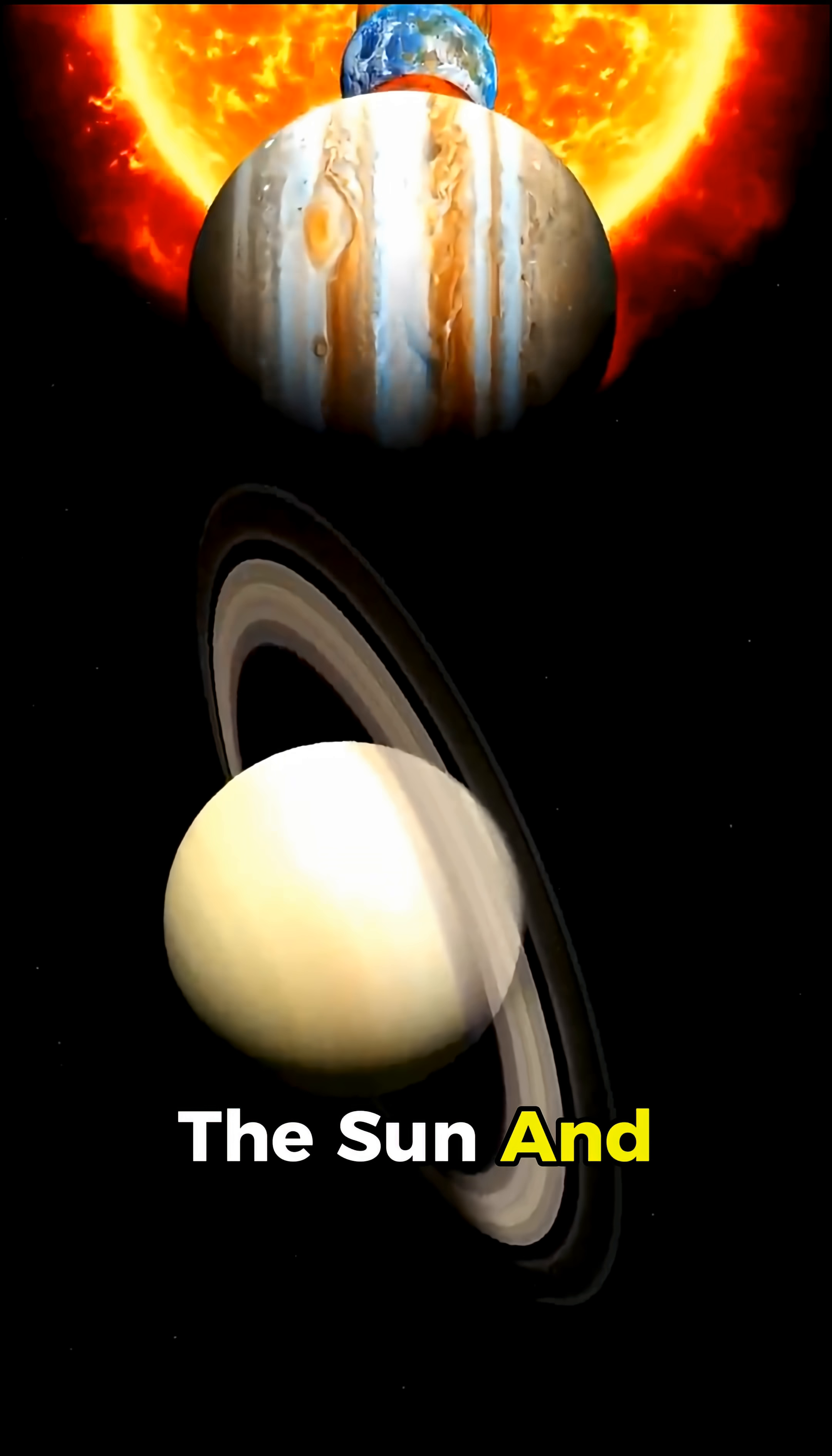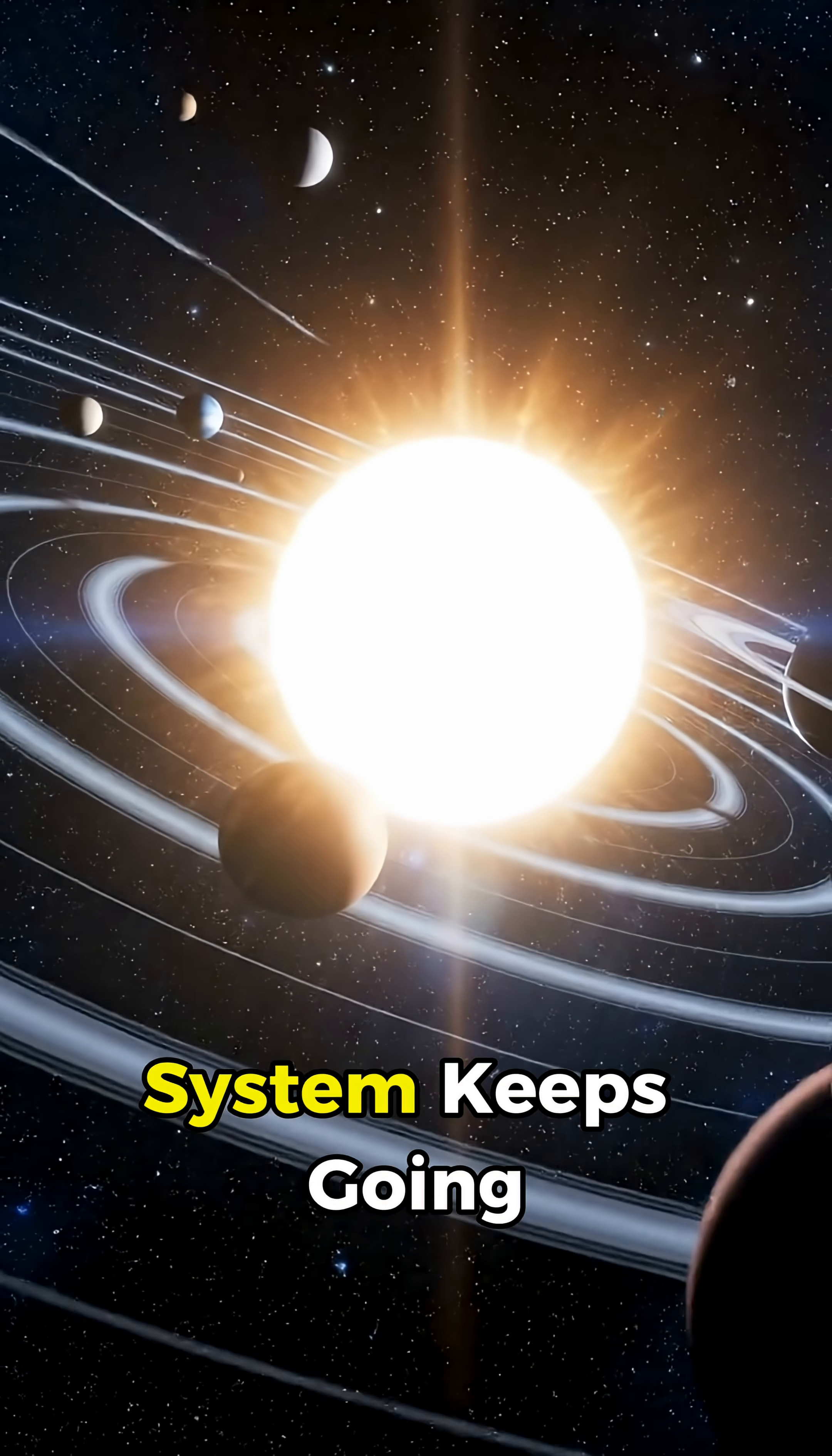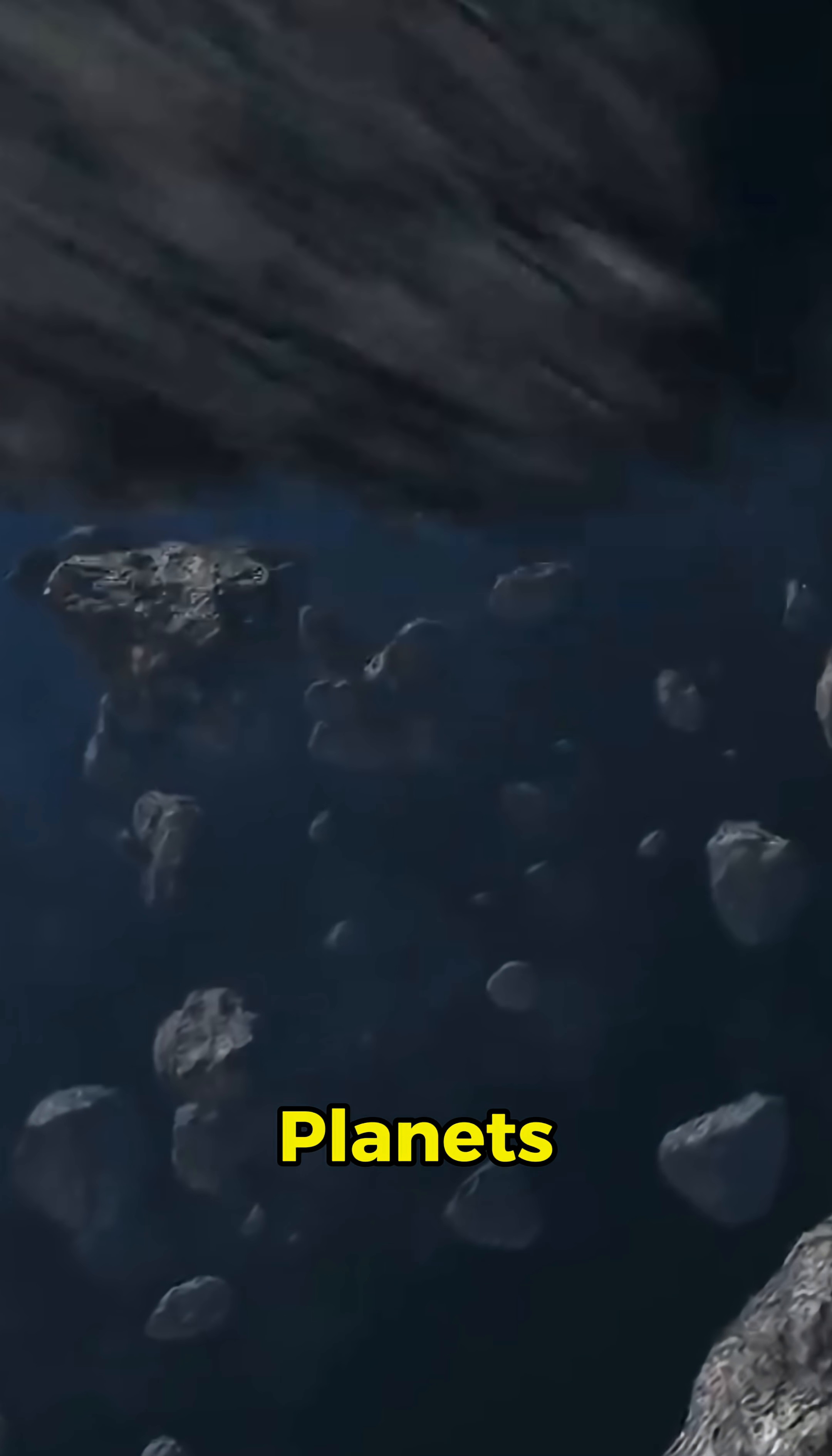The space between the Sun and Pluto alone is about six billion kilometers, which already sounds incredibly huge. But the solar system keeps going well beyond that point. Past Pluto is the Kuiper Belt, a massive area packed with frozen rocks and small planets.